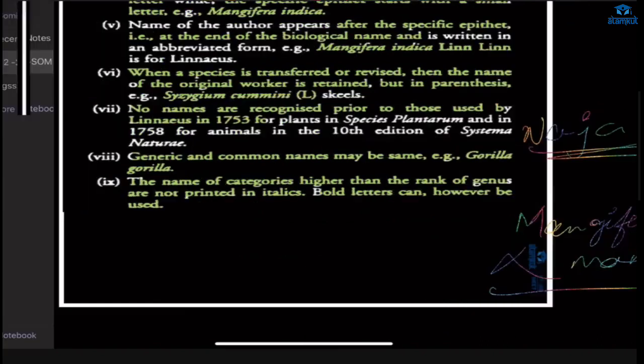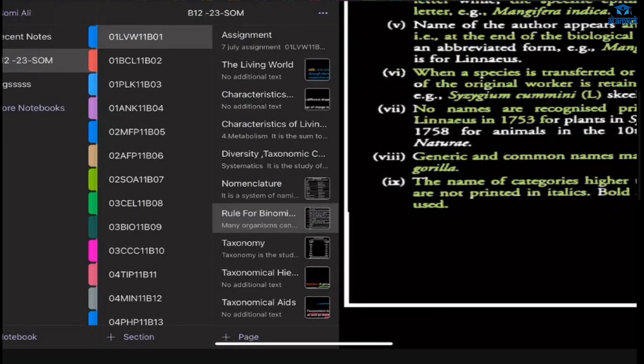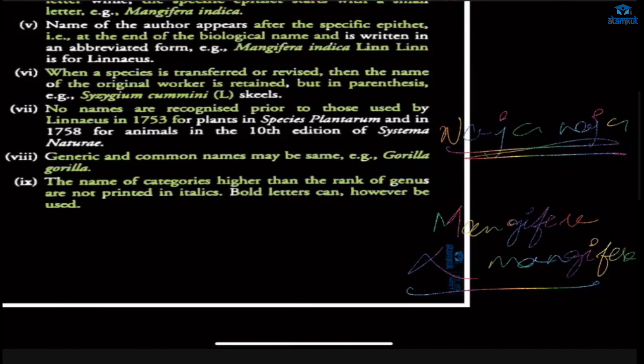So that is all for today's class — all about diversity, taxonomy, and nomenclature. In the next class we will talk about taxonomy in detail. Bye for today.